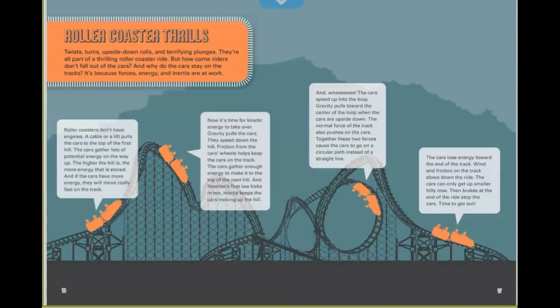Rollercoaster thrills. Twists, turns, upside down, rolls and terrifying plunges. They're all part of the thrilling rollercoaster ride. But how come riders don't fall out of the cars? And why do the cars stay on the tracks? It's because forces, energy, and inertia are at work. So, rollercoasters, first of all, they don't have any engines. A cable or lift pulls the cars up the hill. The cars gather lots of potential energy on the way up. The higher the hill, the more energy that is stored. And if the cars have more energy, they will move really fast on the track. That's why when you see rollercoasters, they have people spread out throughout the whole entire car. Because the more weight you have, the faster you'll go.